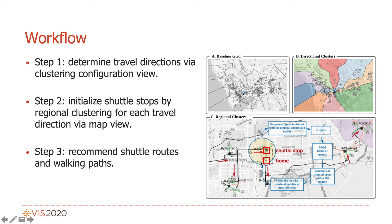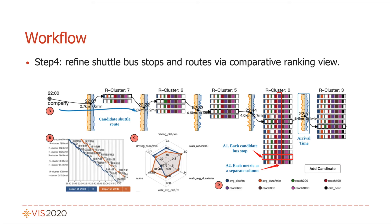Step 4: Refine shuttle bus stops and routes via a comparative ranking view. All the map views convey information about the candidate shuttle bus stops and routes. The domain experts need to explore the properties of each candidate shuttle bus stop to assess its reachability. Here is our system overview.